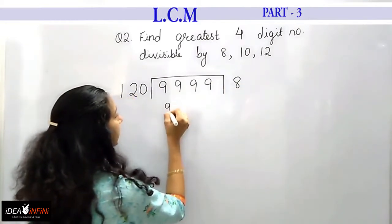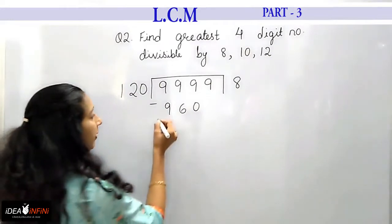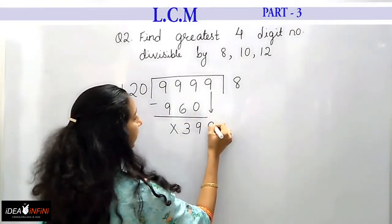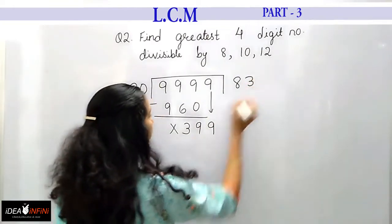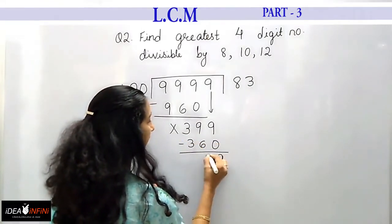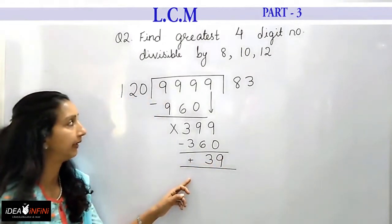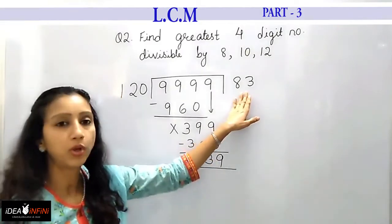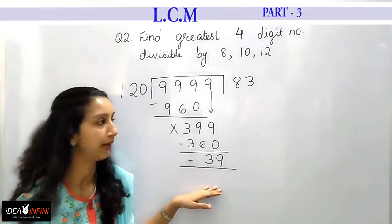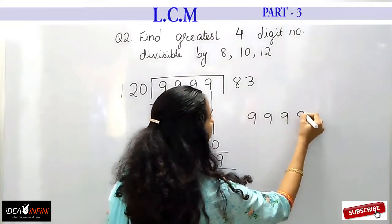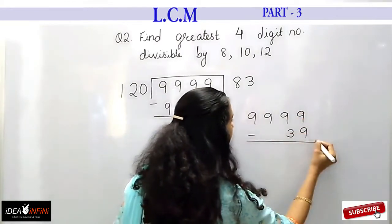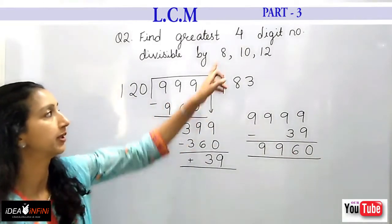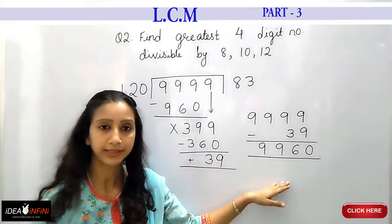Performing the division: 9999 ÷ 120. 120 × 8 = 960, subtracting gives 39; bringing down the next digit gives 399. 120 × 3 = 360, subtracting gives 39. So the remainder is 39. I subtract this remainder from the greatest 4-digit number: 9999 − 39, which gives the greatest 4-digit number divisible by 8, 10, and 12.